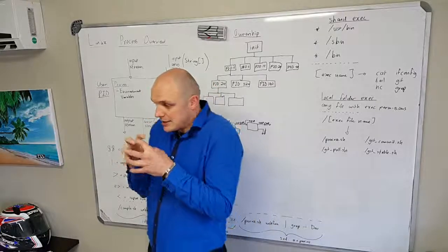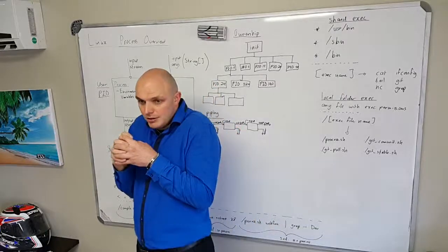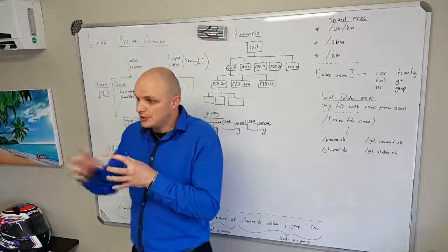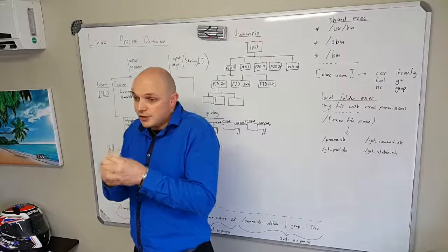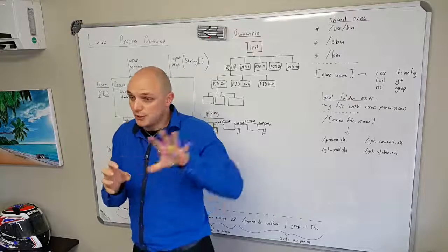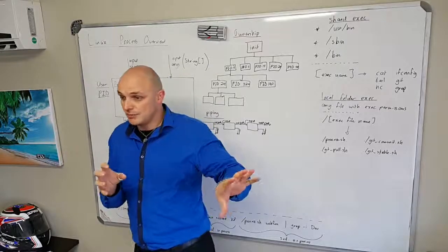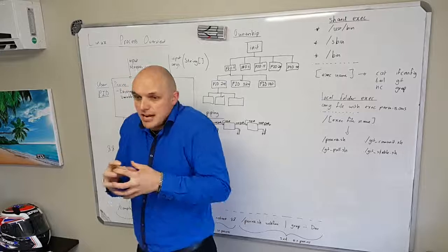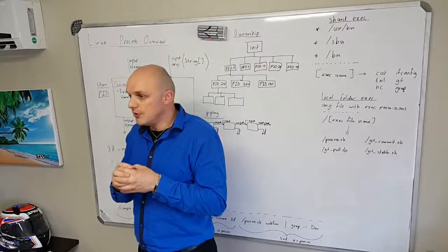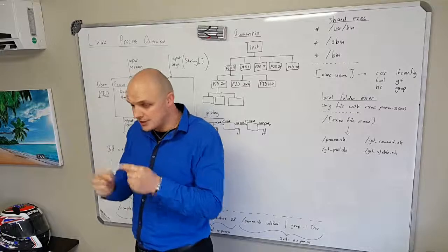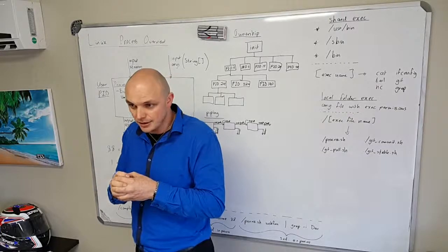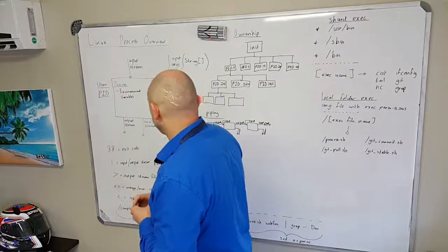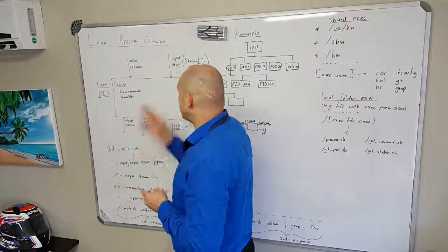A process is basically like a little bubble — it's got code that's executing, memory allocated to it, it belongs to a user so it has certain permissions on the system, and it's a little sandbox secure environment. There's lots of stuff happening inside this process. Now there are general inputs and outputs to a process.